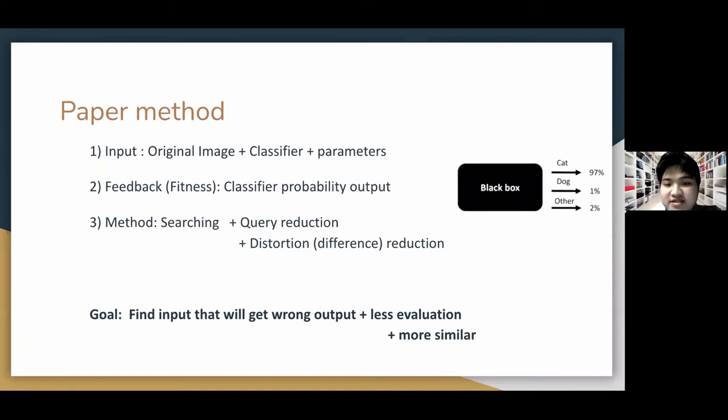So what we have here are the original image and the access to the classifier. The only information we are given to make the searching decisions would be the probability output of the classifier and we want to slightly mutate the image to get the wrong output but we don't want to query the model too many times and we want our adversarial input as similar as possible to the original one.